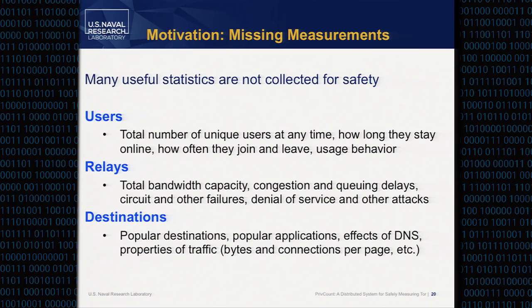Moreover, Tor Metrics doesn't measure everything we want to collect. There are statistics they don't measure precisely because they're not safe to measure. Some things we would like to learn include: for users — how many unique users are using Tor at once, how long they stay online, how often they join and leave. For relays — bandwidth capacity, congestion and queuing delays over time, how many circuits are failing, whether denial-of-service attacks are happening. For destinations — which websites and applications are popular, and properties of traffic like bytes upstream and downstream over Tor circuits.